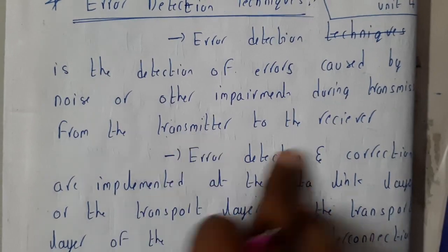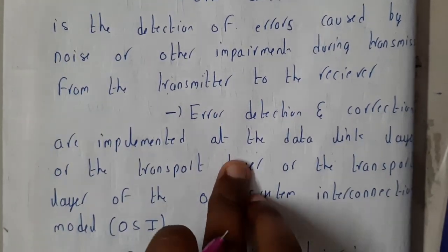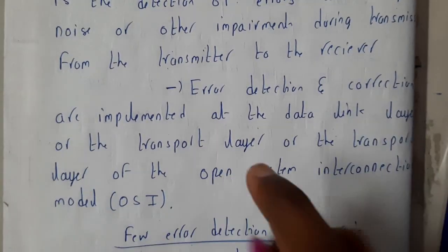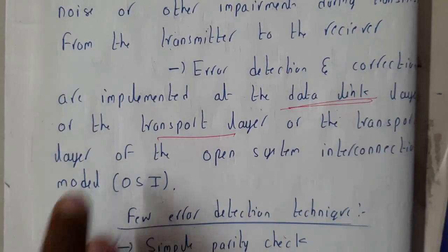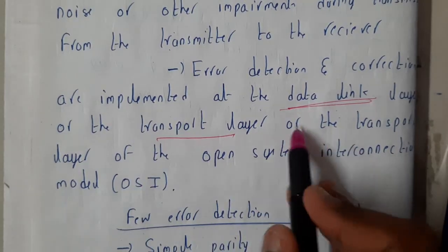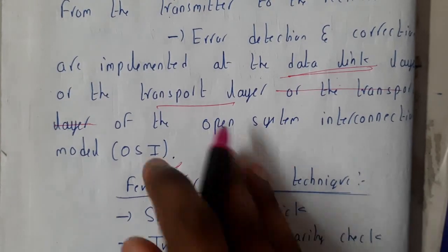Error detection and correction are implemented at the data link layer or the transport layer of the OSI model to remove the errors and send data which is really proper and perfect.